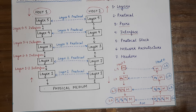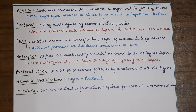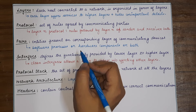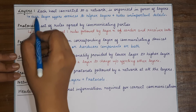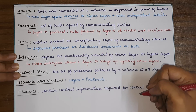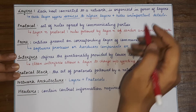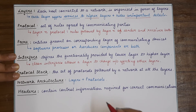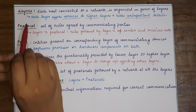Those were the key terms required to understand network architecture. Now let's review the formal definitions. A layer is basically a level that forms the structure of a network. Each host connected to a network is organized in the form of layers, and each layer provides some services to its higher layer while hiding unimportant details — providing abstraction, similar to object-oriented programming.